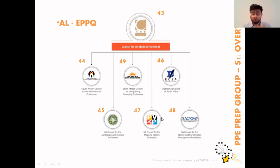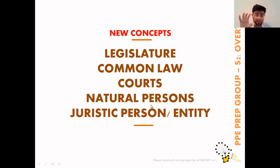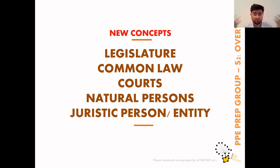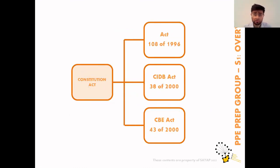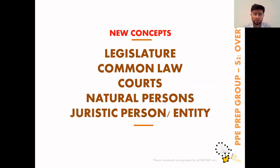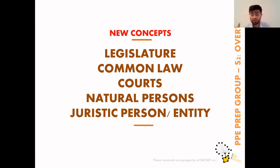This is an overview of how the law has created these bodies to enforce our professions. The major concepts you need to take away are: legislature, common law, courts, natural person, and juristic person. Common law is based on precedent — things that have already happened are formalized so they continue to apply in future unless revised. These concepts came up in the 2021 paper. Memorizing and understanding will differentiate you — it's not just about memorizing without understanding.